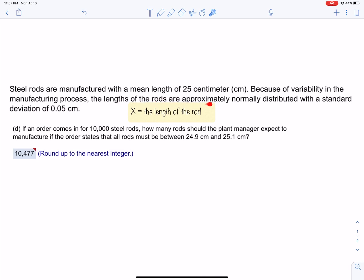The lengths of the rods are approximately normally distributed with a standard deviation of 0.05 centimeters. When you're producing these rods, they're not going to be exact. There's some variability in the length of the rod.